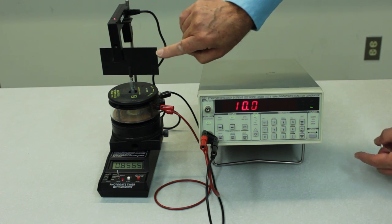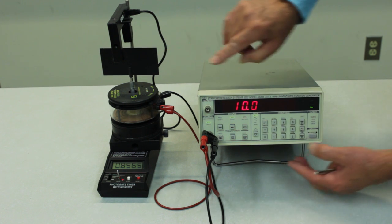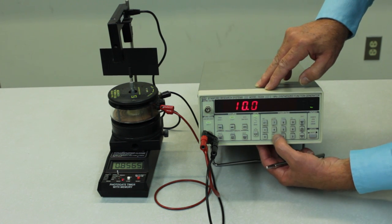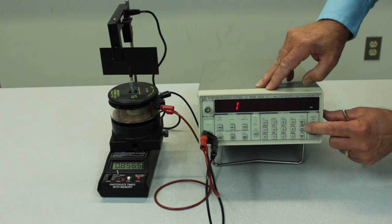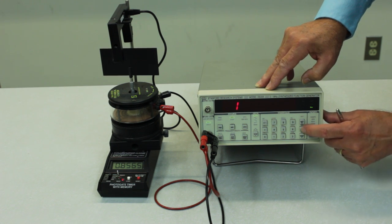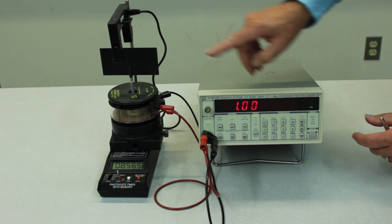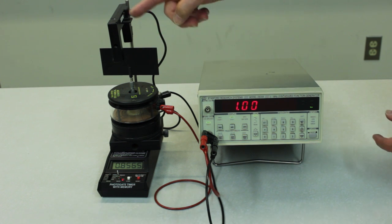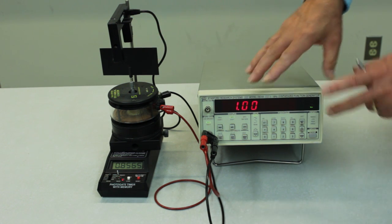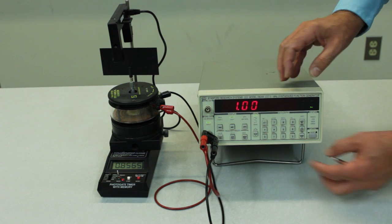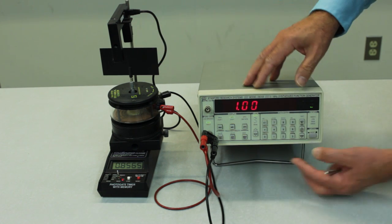And you'll just watch what happens if I don't have the amplitude set high enough. Let me set this to 1 volt peak to peak. And now the flag is not moving with enough amplitude to trigger the gate. So it's important not only to set the correct frequency but also to have sufficient amplitude.